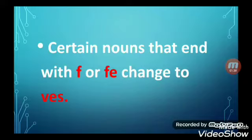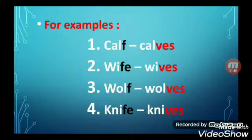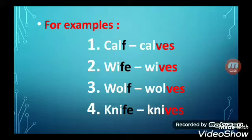Certain nouns that end with F or FE change to VES. For example: calf→calves. The given words end with F or FE, so we just have to remove F or FE from the end of the word and instead write VES at the end to make it plural.